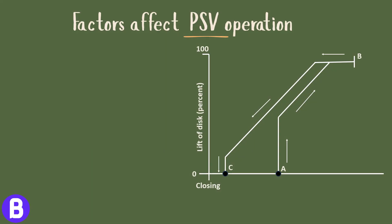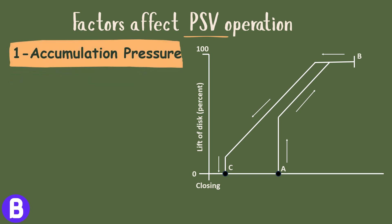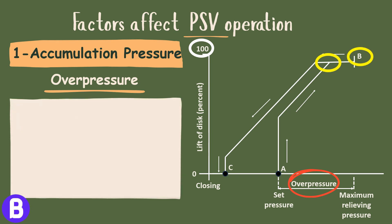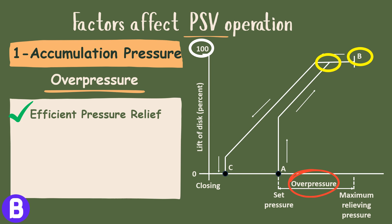Let's talk about some parameters that shall affect the pressure safety valve operation. Factor 1: Accumulation Pressure. Accumulation pressure, also known as overpressure, is the maximum pressure that may build up above the set pressure of the valve during discharge before the valve reaches full lift. It is imperative for the PSV to achieve full lift within the accumulation limit to ensure efficient pressure relief without damaging the valve or the system. Exceeding this limit can lead to the valve not opening sufficiently, failing to relieve enough pressure, which may cause system failure.